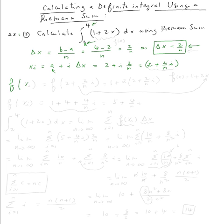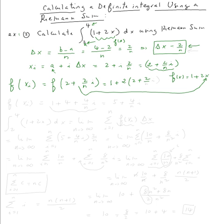Now we need to find f of x sub i. Since f of x is one plus two x, we take x sub i — which is two plus two over n times i — and plug it in. So f of x sub i equals one plus two times (two plus two over n times i), which distributes to one plus four plus four over n times i, giving us five plus four over n times i.